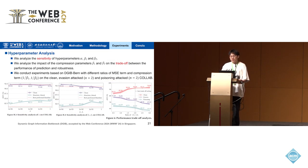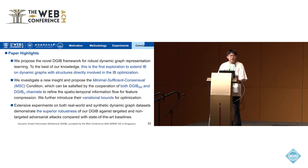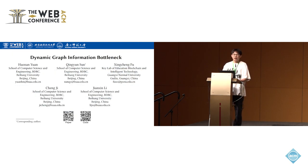We also performed hyperparameter analysis; due to time limits, please refer to the paper for details. In conclusion, we propose a novel DJIB framework for robust dynamic graph representation learning, which is the first exploration to extend information bottleneck to dynamic graphs where structure is directly involved in optimization. We investigate the new MSA condition, which is satisfied by cooperation of the DJIB-MS channel and DJIB-C channel. Extensive experiments on both real-world and synthetic datasets demonstrate the superior robustness of our proposed model. Thank you for listening.